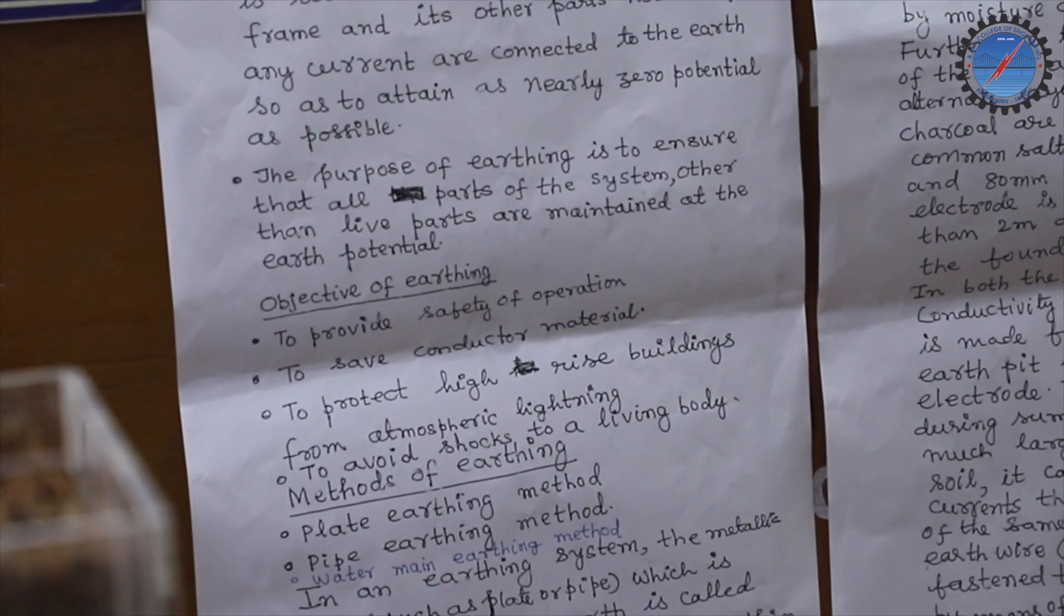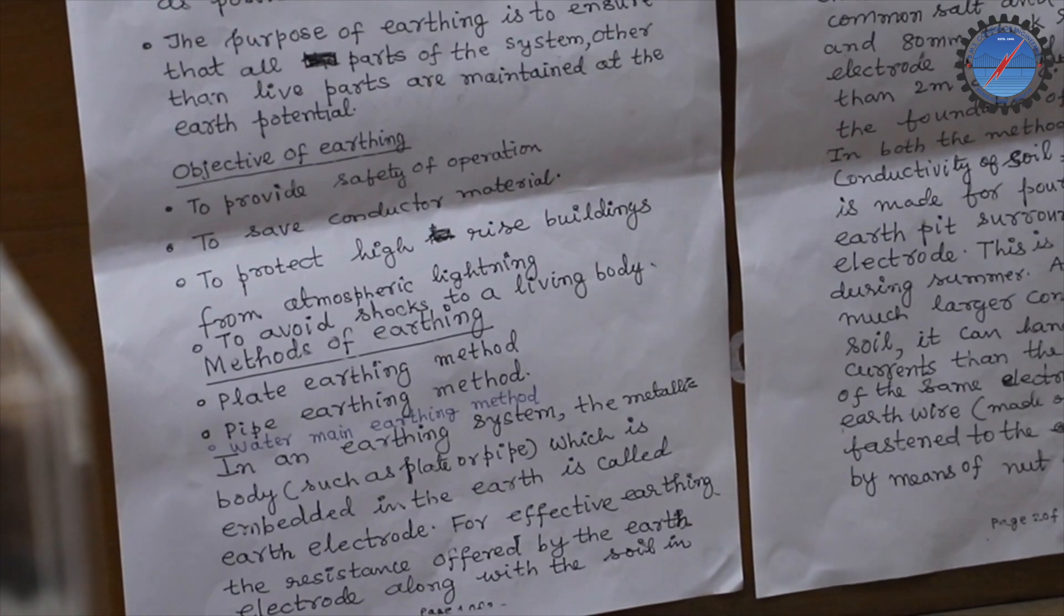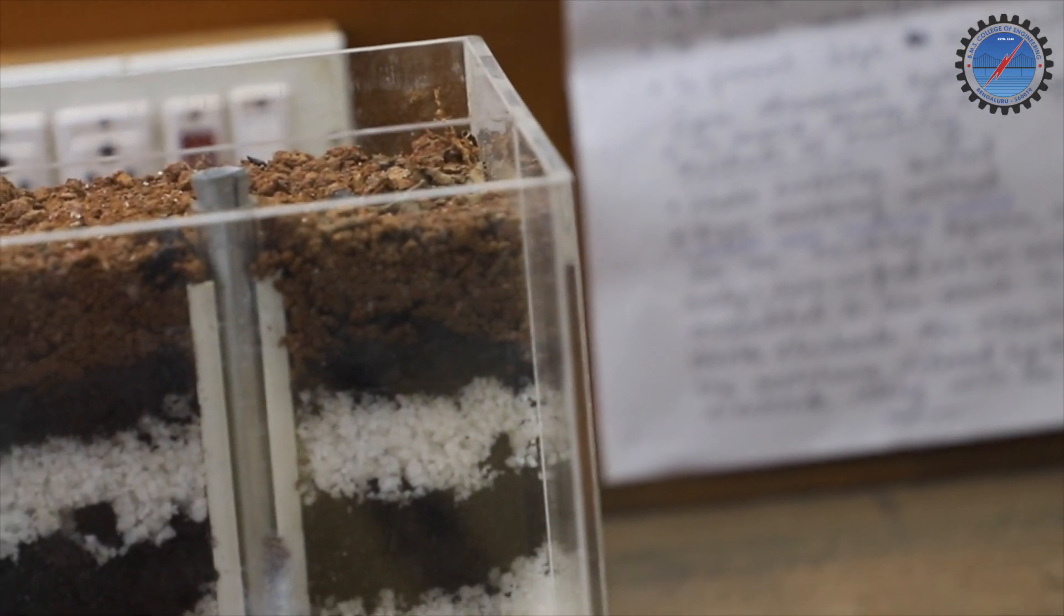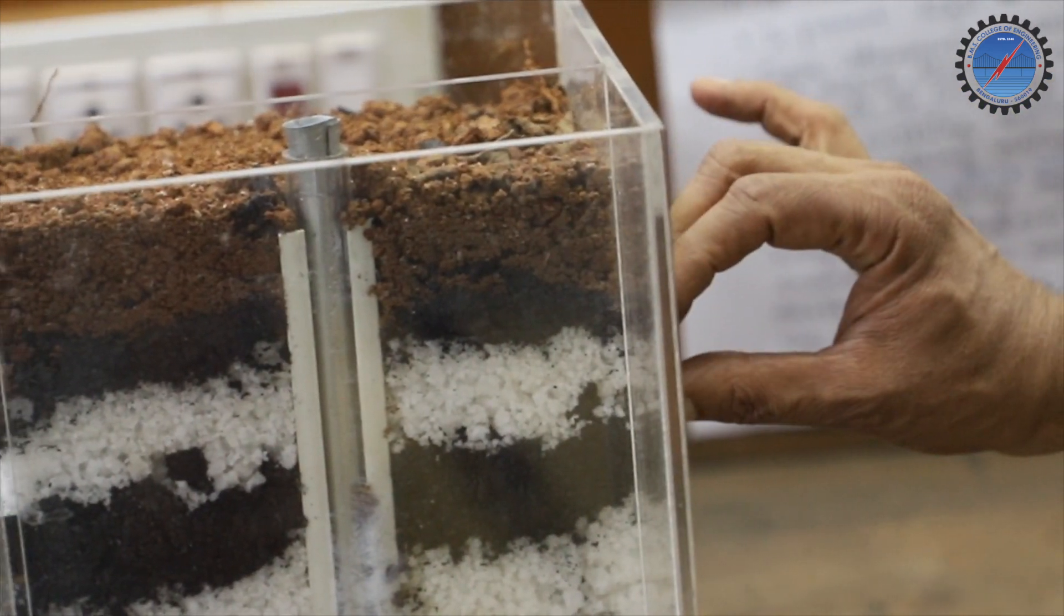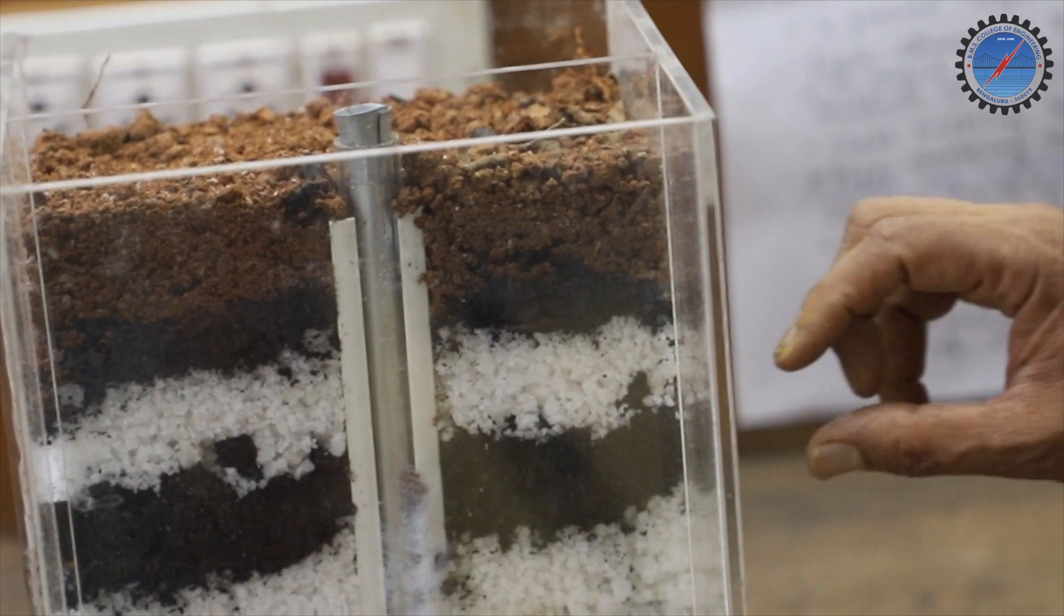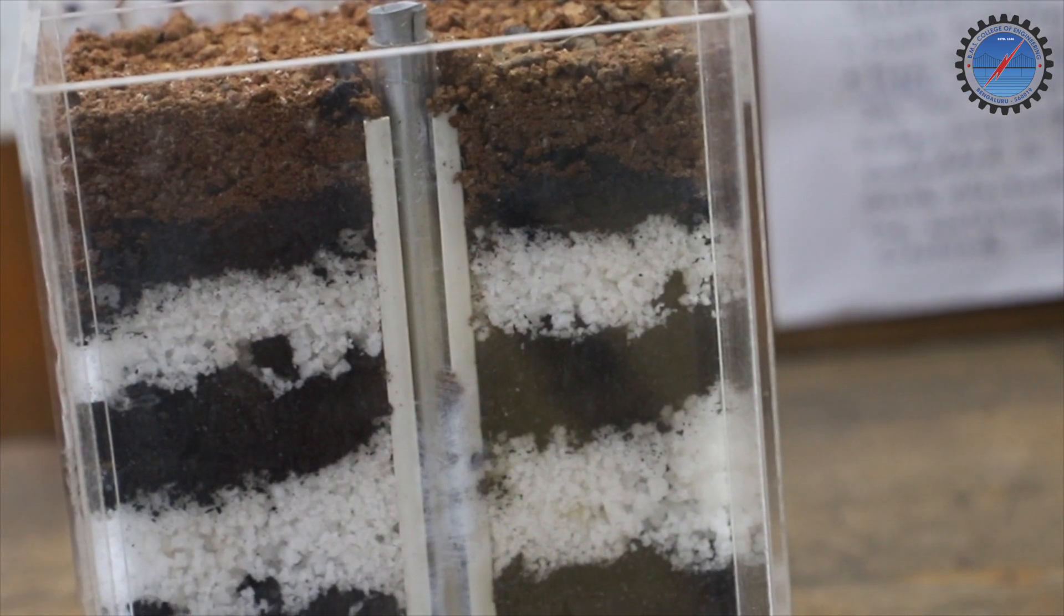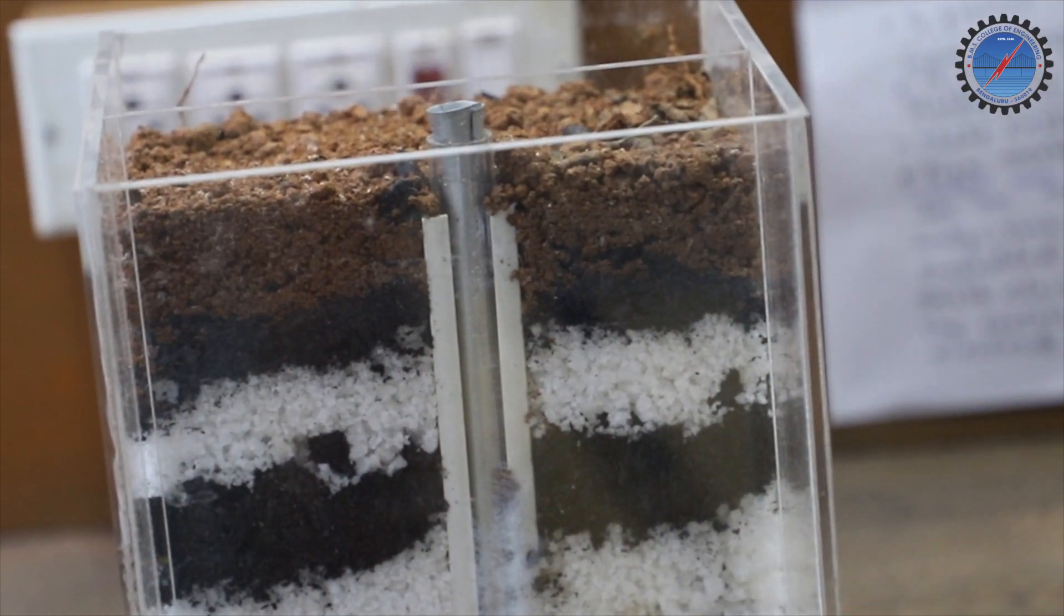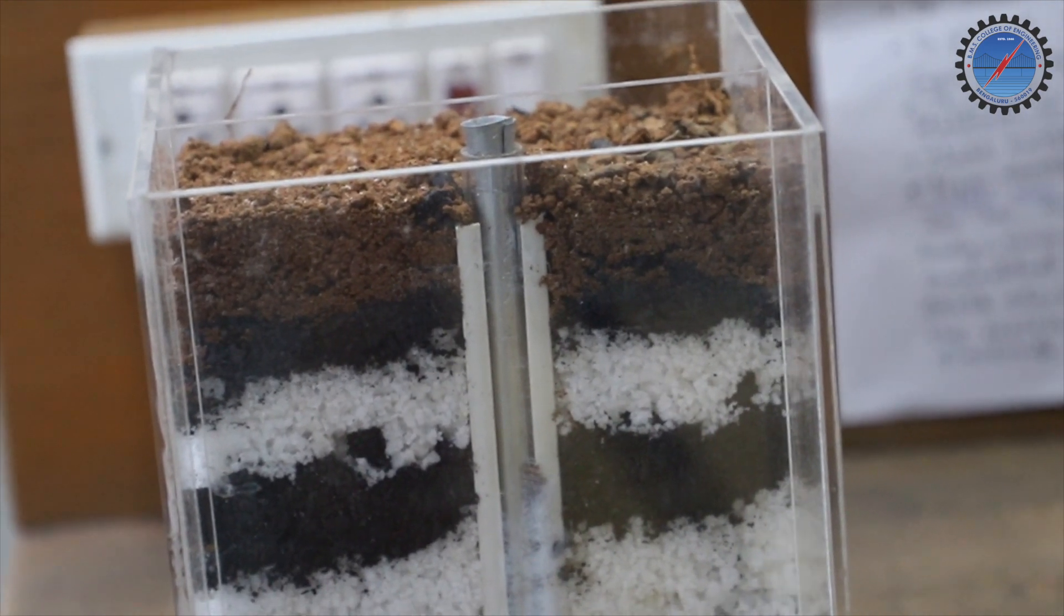Furthermore, to increase the conductivity of the soil around the earth electrode, we are going to keep alternative layers of salt and charcoal which is filled. The thickness of the soil layer is 30 mm and the charcoal layer is 80 mm. The earth electrode should be kept at least 2 meters from the ground level.